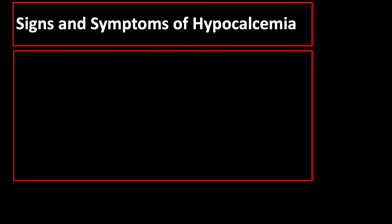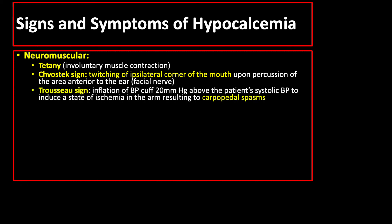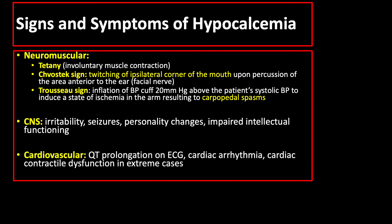The signs and symptoms of hypocalcemia include neuromuscular manifestations such as tetany, which is involuntary muscle contraction; Chvostek's sign, or twitching of the ipsilateral corner of the mouth upon percussion of the area anterior to the ear where the facial nerve is found; or Trousseau sign, wherein inflation of a blood pressure cuff 20 mmHg above the patient's systolic blood pressure induces ischemia in the arm resulting in carpopedal spasms. Other signs include central nervous system and cardiovascular system manifestations.